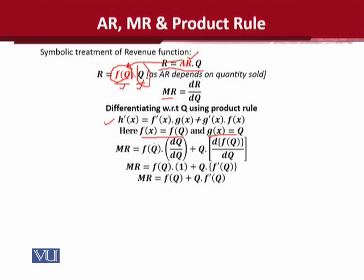Now you can substitute this value in the product rule formula. In this case, we wrote f(Q) as the first term and Q as the second term. So f(Q) is written as it is, g(Q) is equal to Q, and f(Q) is equal to f(Q). We carry g(Q) as it is, calculate the derivative of f(Q), multiply by the other function in its actual form, and place a plus sign in between.